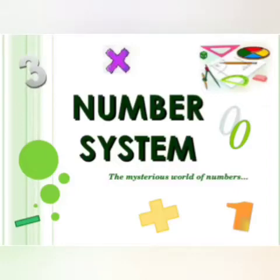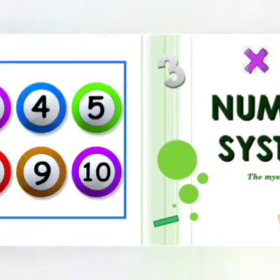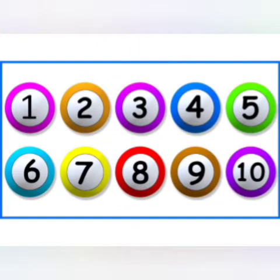Let's learn the Hindu-Arabic number system: 1, 2, 3, 4, 5, 6, 7, 8, 9, 10. These are the Hindu-Arabic system.